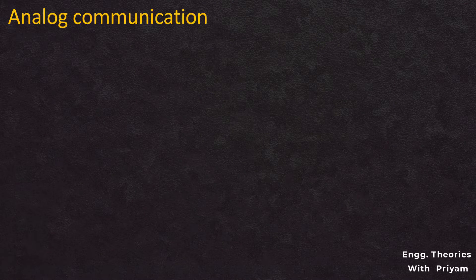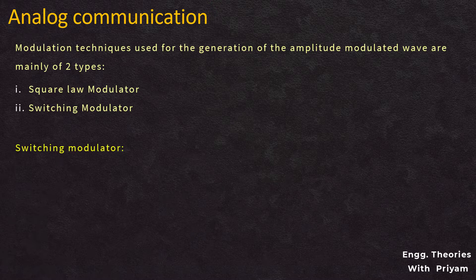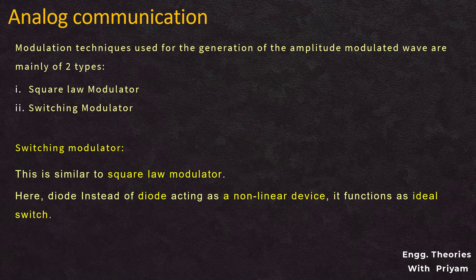In the previous lecture we saw that an amplitude modulated signal can be generated by using a square-law modulator and a switching modulator. We already saw what a square-law modulator is. Now let us understand what a switching modulator is and how the switching modulator generates an amplitude modulated signal. The switching modulator is similar to the square-law modulator; the only difference is that instead of using a diode as a nonlinear device, it functions as an ideal switch.